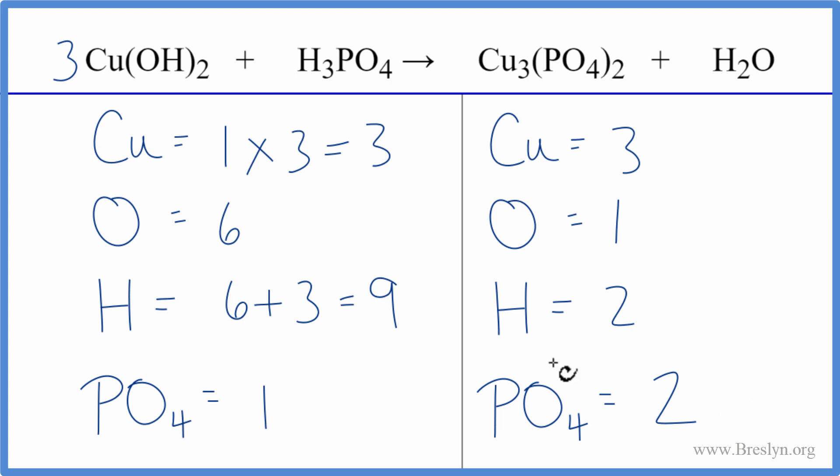Let's fix the phosphates next. We need two over here because we have two here, so we can multiply this by two. That means we have one phosphate times two, that gives us two of those. Those are balanced. Let's update the hydrogens here. We have two times one times three, six hydrogens, plus three times two, that's six, so now we have twelve hydrogen atoms.